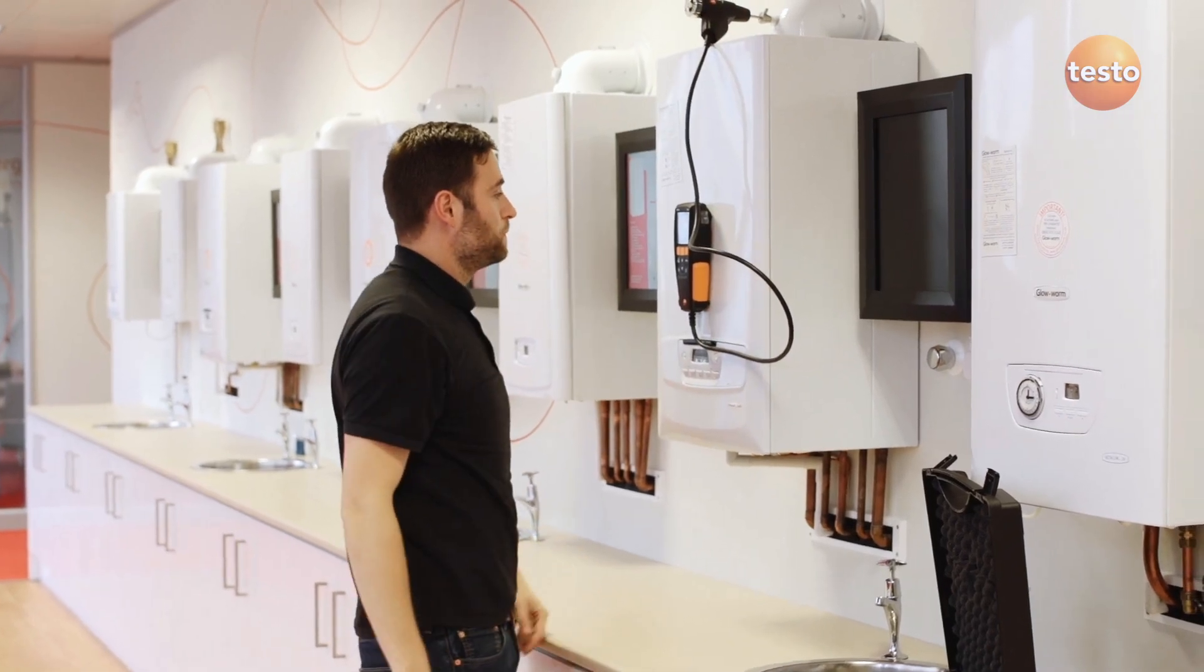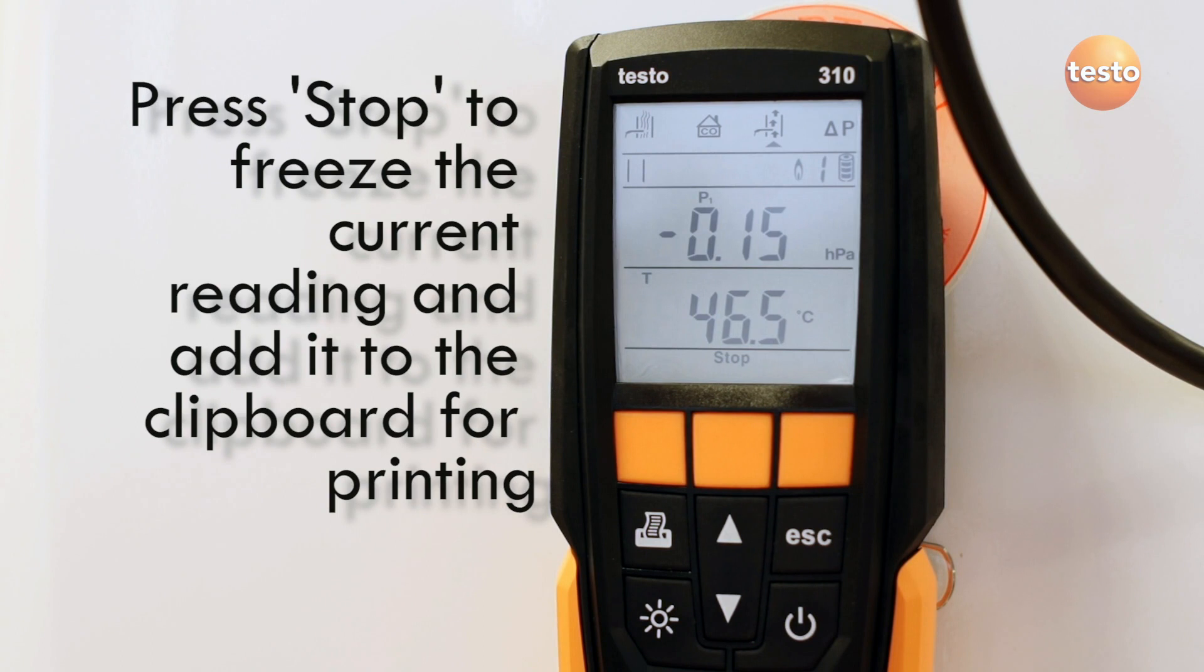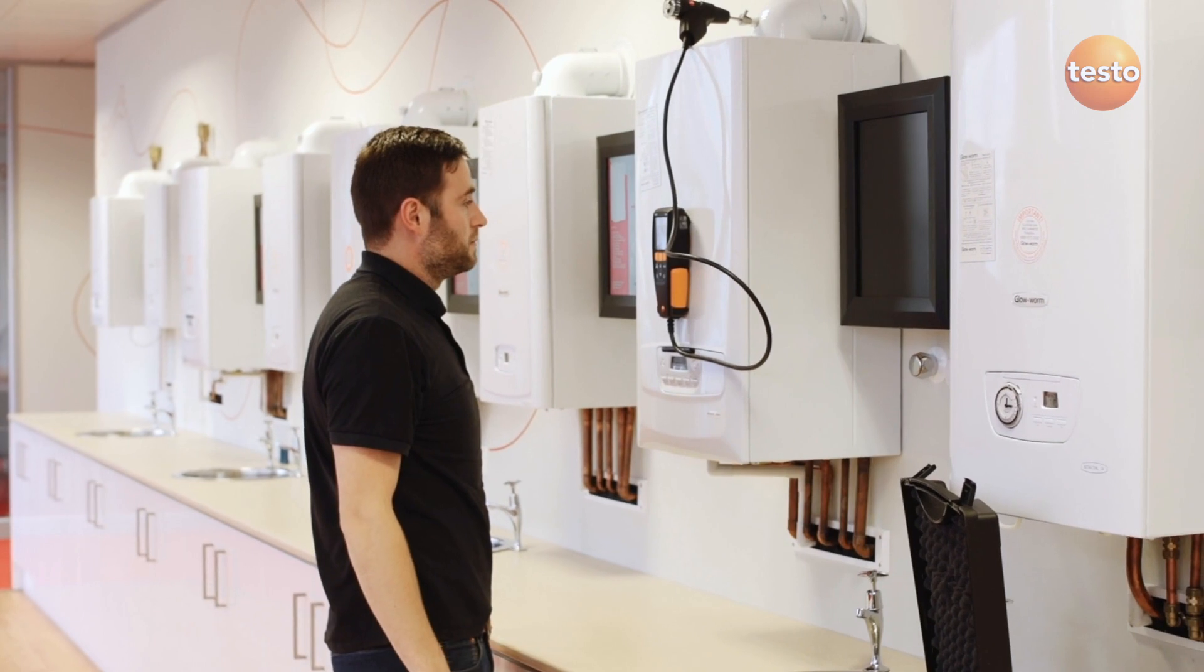The 310 immediately displays the small pressure caused by the flue draft. When the reading is stable, press stop, which freezes the current measurement and puts it in the clipboard for printing later.